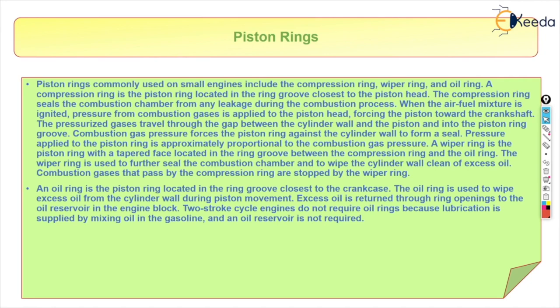A wiper ring is the piston ring with a tapered face located in the ring groove between the compression ring and the oil ring. The wiper ring is also used to further seal the combustion chamber and to wipe the cylinder wall clean of excess oil. The combustion gases that pass by the compression ring are stopped by the wiper ring.